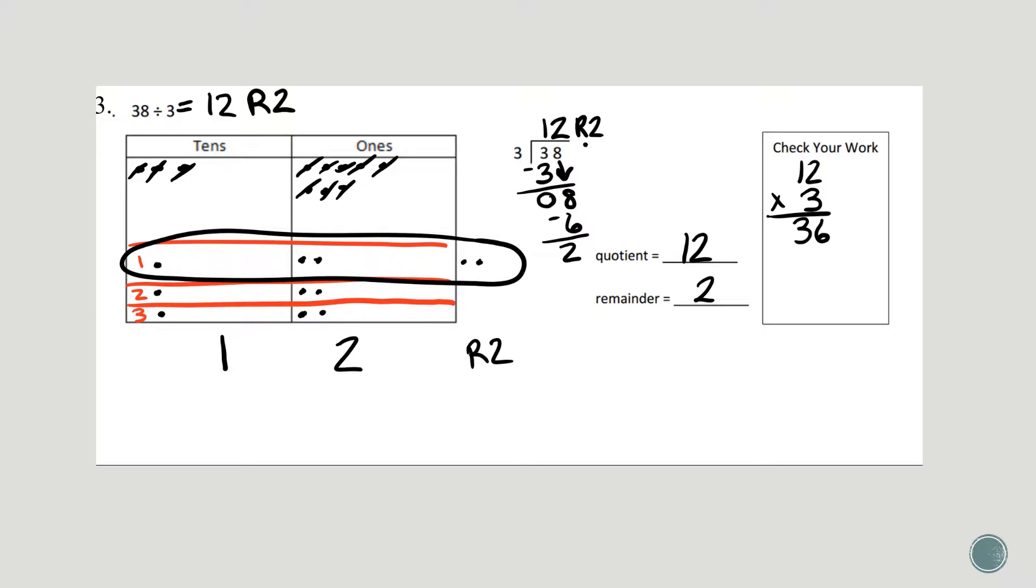So I need to add on my remainder. 36 plus 2 is 38, and there it is. I can checkmark it, because it matches.